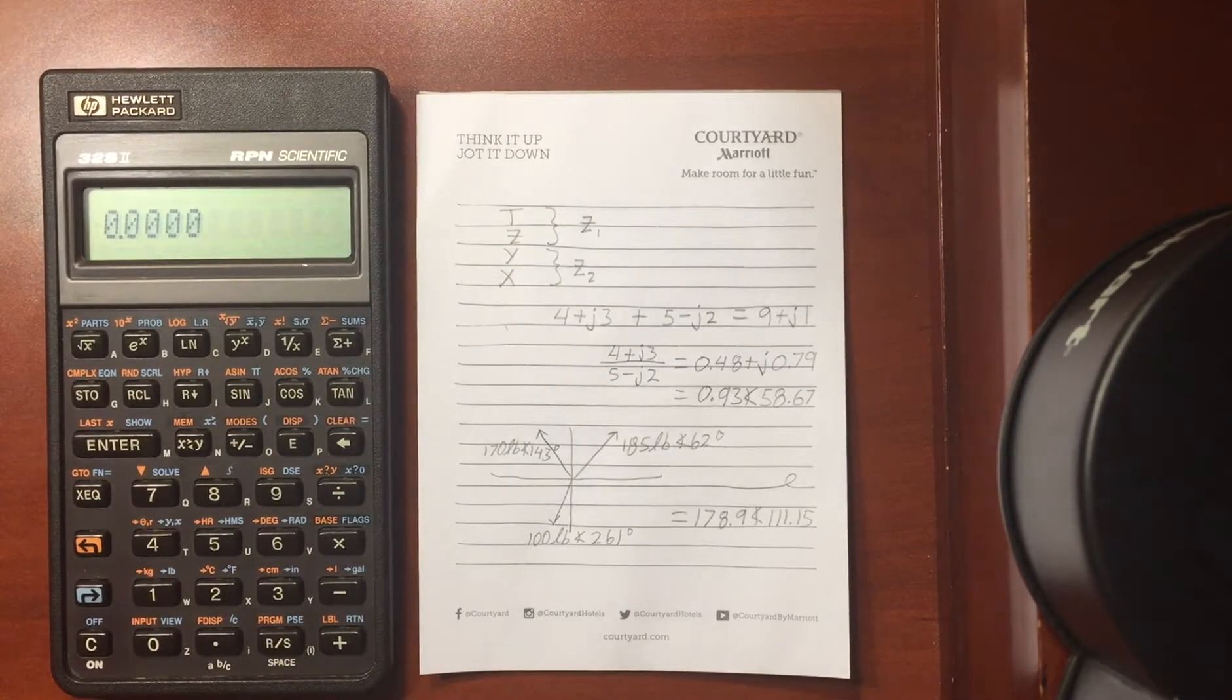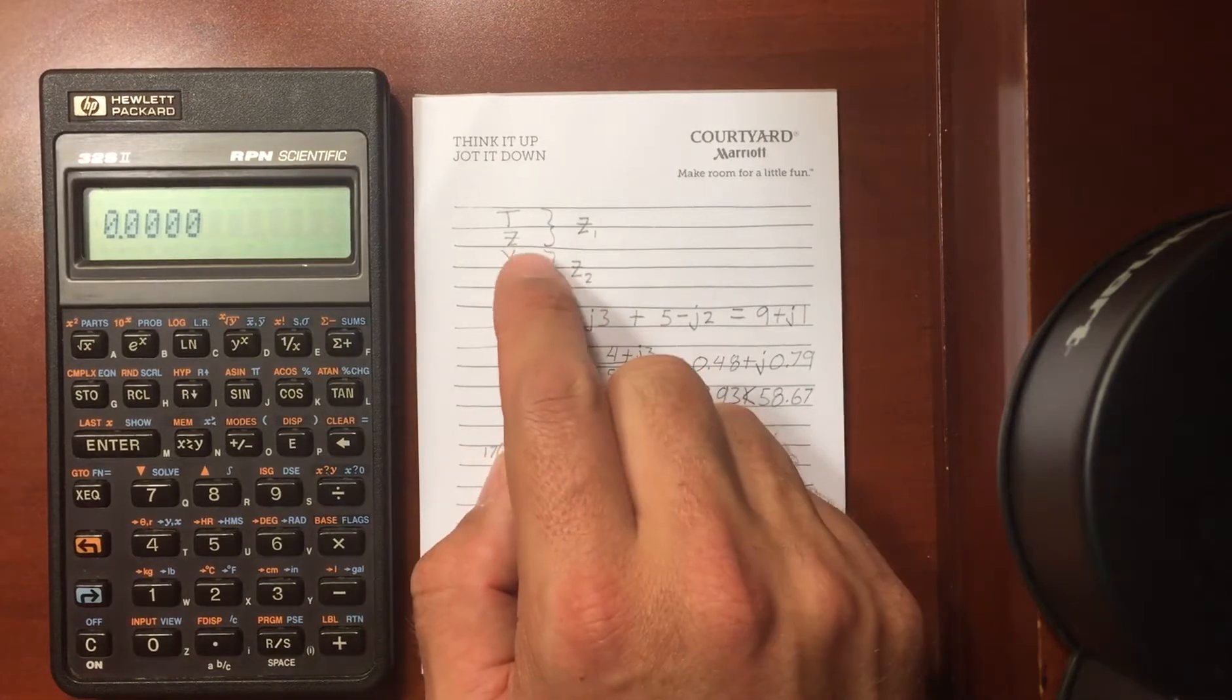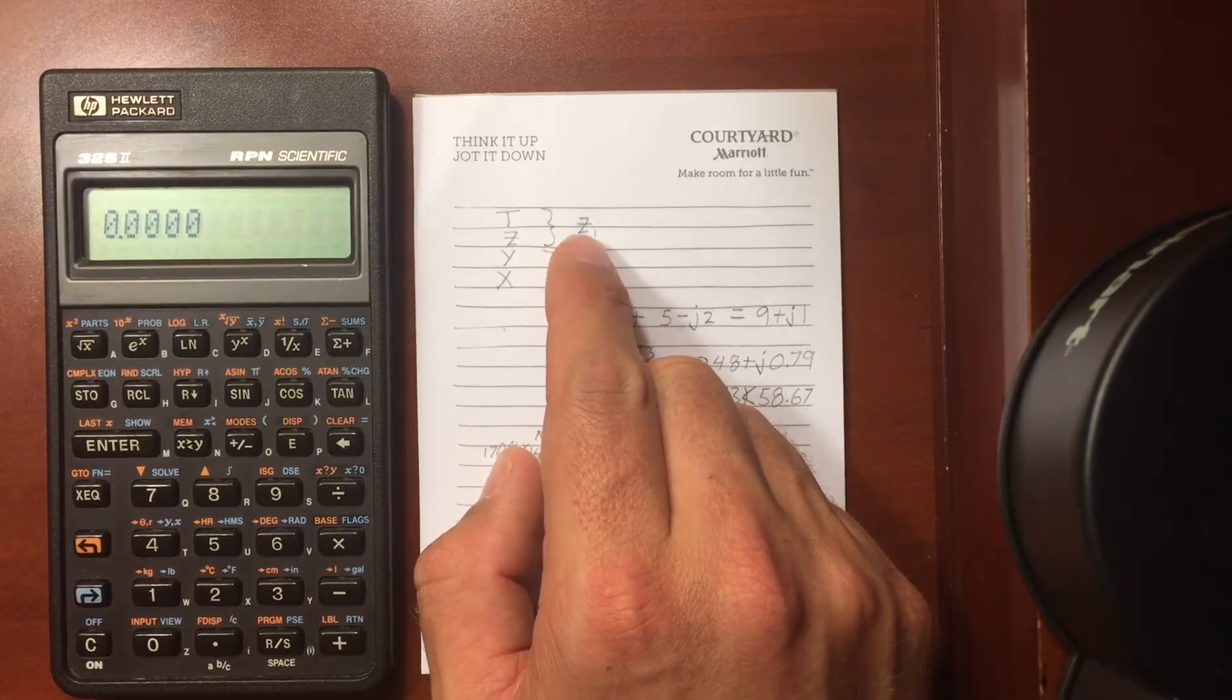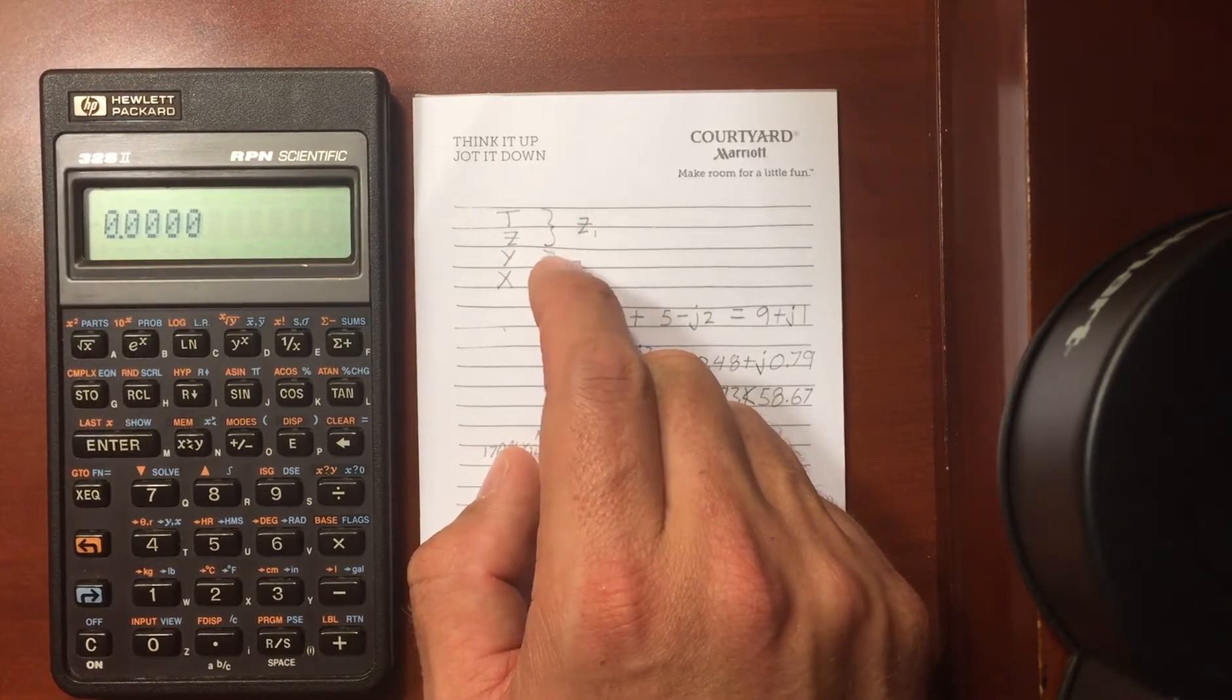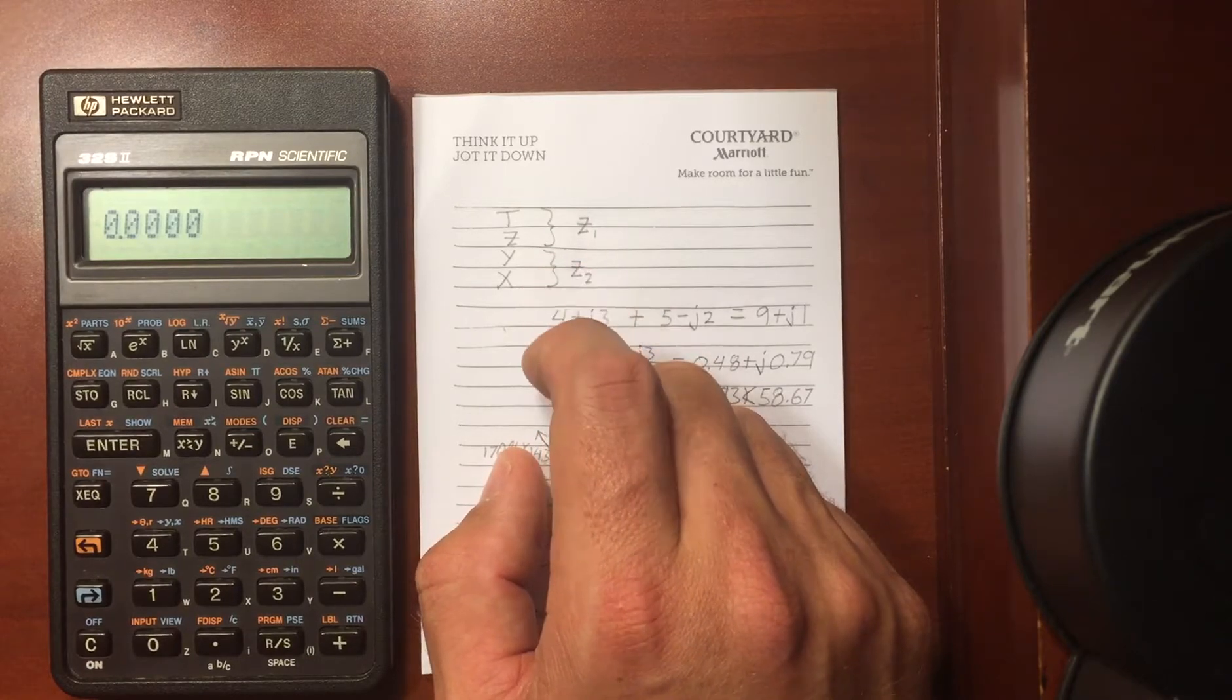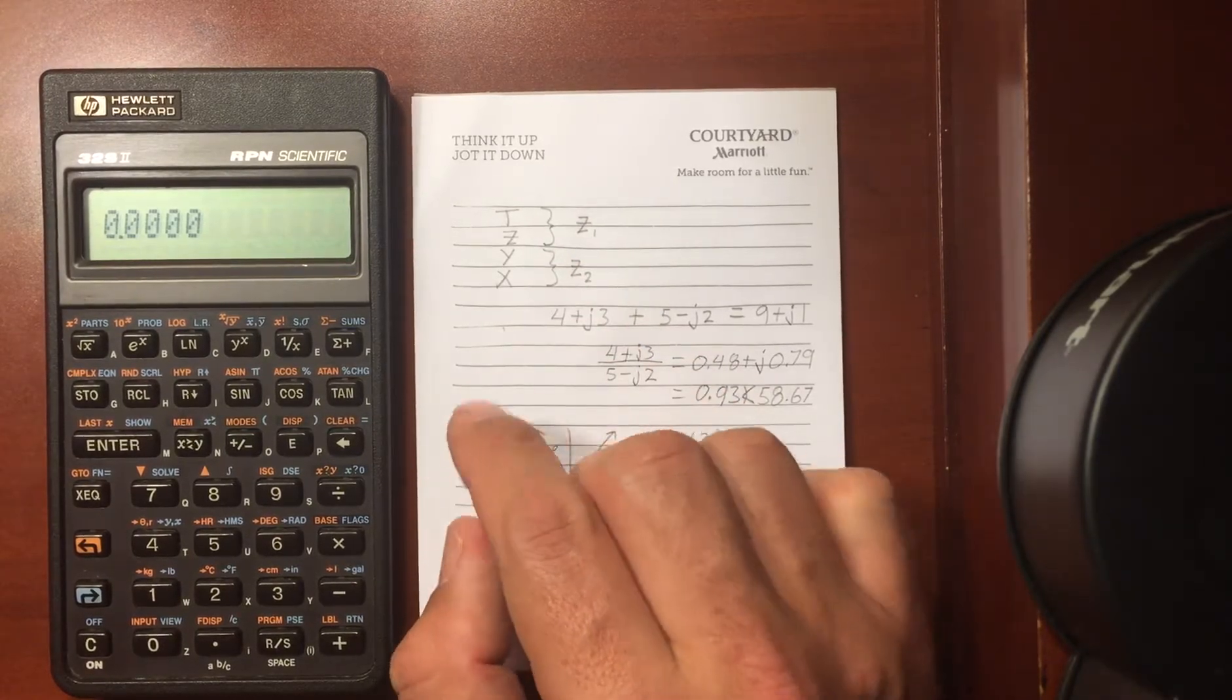So the way you would do it is you enter in your complex numbers into the stack like this. Your complex number 1 is going to be in your T and Z positions, and your number 2 is going to be in the Y and X positions.